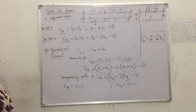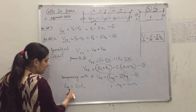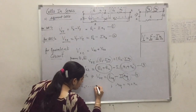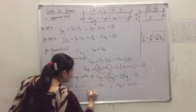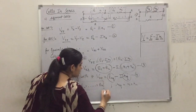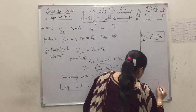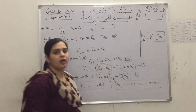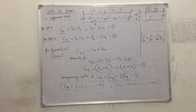Generalizing this result for N cells: E equivalent equals E1 plus E2 plus dot dot dot plus EN, and R equivalent equals R1 plus R2 plus dot dot dot plus RN. So the topic of different cells connected in series is now complete.